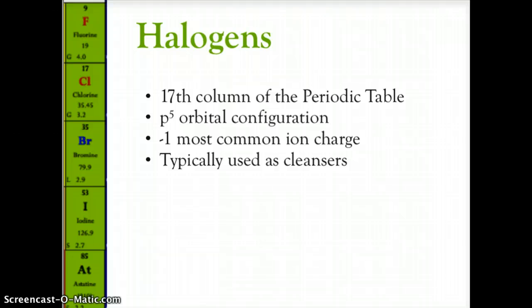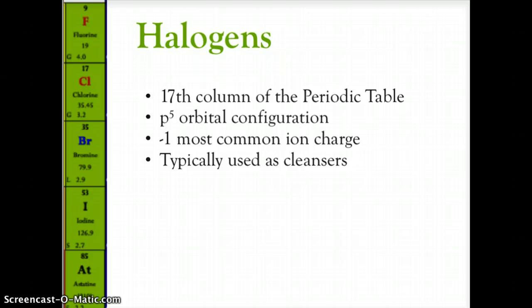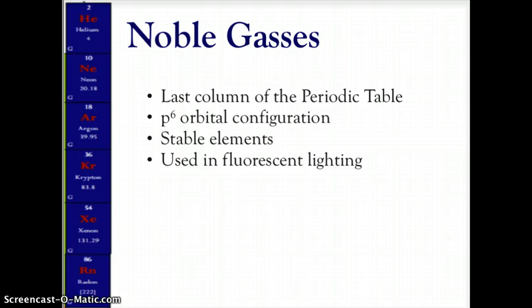On the far right, the second column from the right — the 17th column — contains the bright green halogens. These are called P5: they are the P block with five electrons in that orbital, and they most typically take on a negative one charge. They are typically used as cleansers — fluorine for cleaning teeth, chlorine for cleaning pools, and iodine for cleaning wounds — each with their own special characteristic suited for that job.